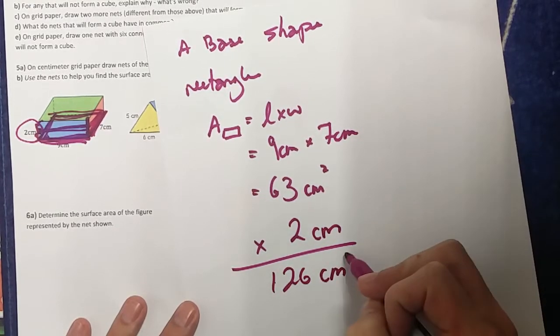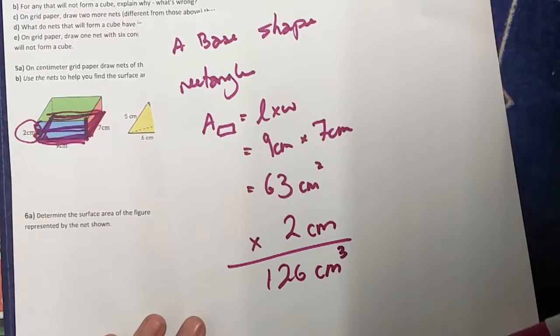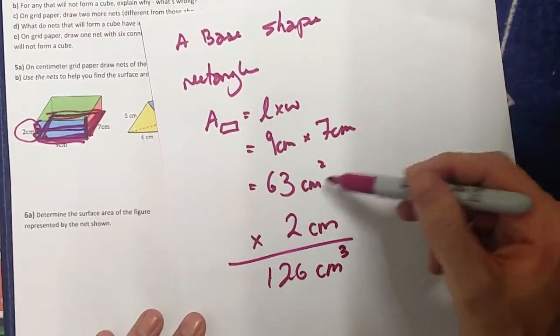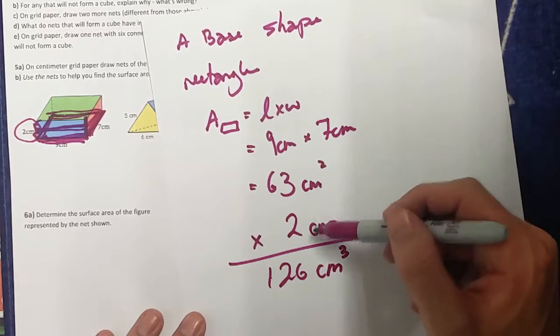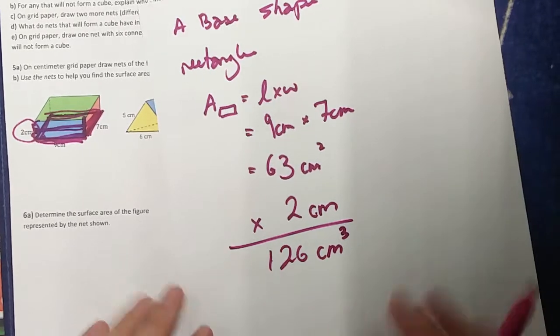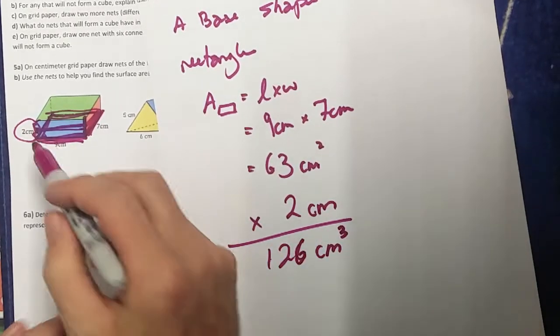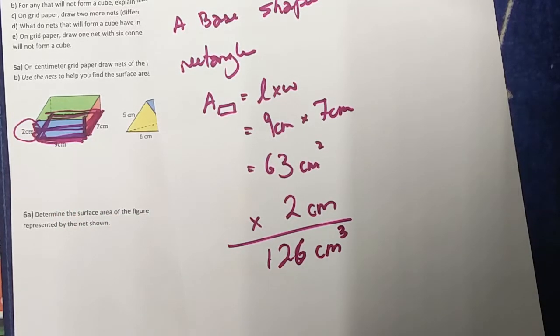So 63 times 2, or it's not just 2, sorry, it's 2 centimeters. 63 times 2, I'm going to have 126. And now it's going to change to centimeters cubed. If you know your exponents, I have centimeters squared times centimeters, which is centimeters cubed.